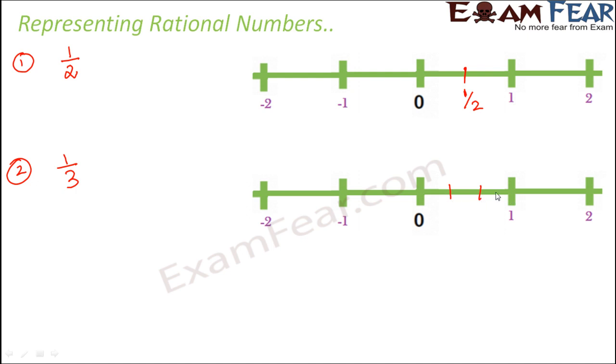So now you have 3 equal parts. So that means this part, the first part, will be 1 by 3. The second part is also 1 by 3. But from 0, how much it will be? 1 by 3 plus 1 by 3. So that means this point will be 2 by 3.